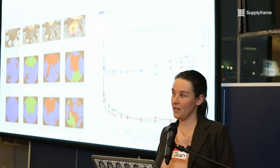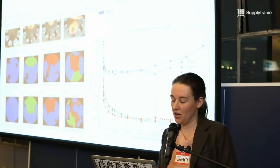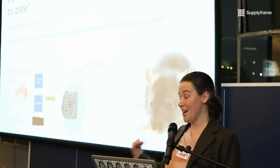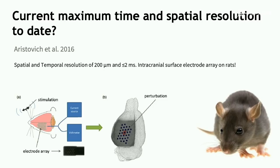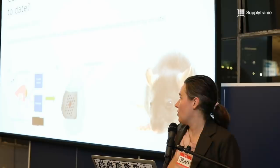You might ask what's the height of this technique, what's the best people have got. The spatial resolution achieved on a rat is 200 microns at 2 milliseconds time resolution. That's pretty good — that's enough to see action potentials or neuronal depolarization, which is like a holy grail of neuroscience or functional neuroimaging. They've been able to do that using an ECoG array on the cortex of a rat in 2016, and the first author on the paper is Kirill Arisevich.